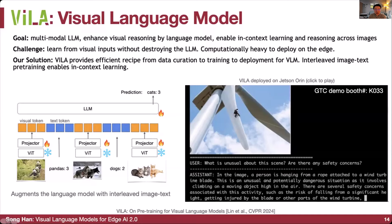Our solution is VILA, which provides an efficient recipe from data creation to training to deployment for visual language models. We train it with interleaved image-text data — the interleaved image-text dataset format enables in-context learning. We concatenate all tokens together: visual tokens extracted by a ViT, followed by a projector, concatenated with text tokens, so everything becomes tokens that are fed to the large language model. Different from prior work, we fine-tune this large language model together with the visual projector, which is crucial to enable multi-image reasoning.